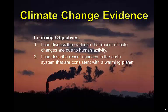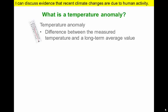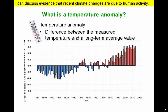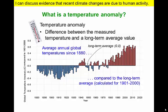But before we can begin, we have to explain a term that gets used a lot during discussions of climate change. We need to introduce you to a temperature anomaly. A temperature anomaly represents the difference between the measured temperature and a long-term average value. Climate researchers calculate long-term averages from data sets spanning 30 years or more. This graph shows average annual global temperatures for each year since 1880. Rather than plot the actual temperature, the data are compared to the long-term average calculated for the last century. The zero line represents the calculated average temperature. Blue and red bars show the difference above or below average for each year.